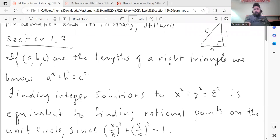So continuing with the theme of Pythagorean triples, if a, b, and c are the lengths of a right triangle, we know from previous sections that a squared plus b squared equals c squared. That's the Pythagorean theorem.